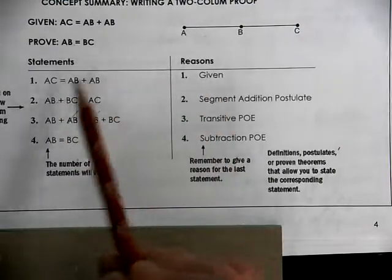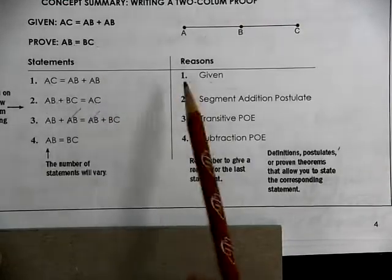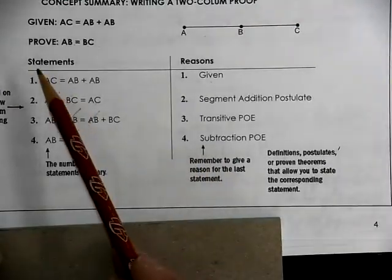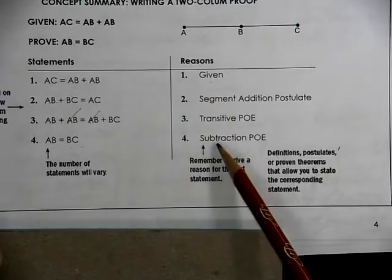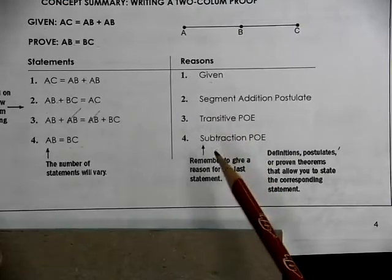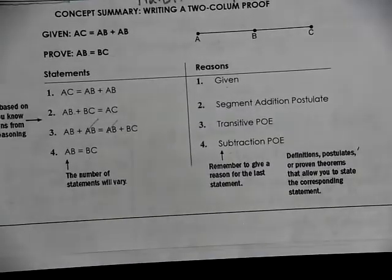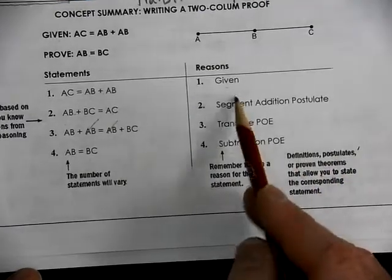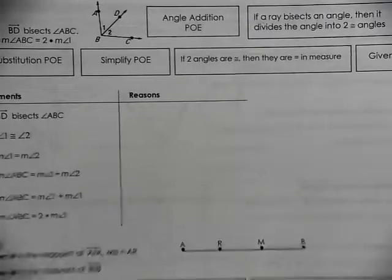Your first reason will typically always be 'given.' But listen carefully — the last reason is never the word 'proven.' People often think: you wrote 'given,' so you might as well write 'proven' — no, you will never write the word 'proven' on your paper. You can use definitions, postulates, or theorems as reasons for the steps you take.